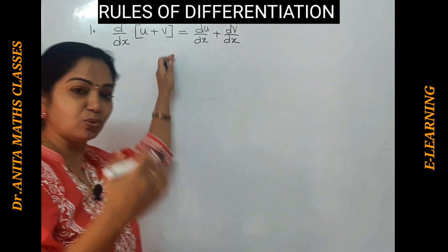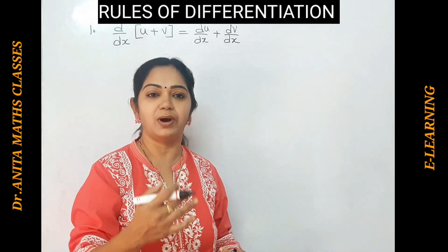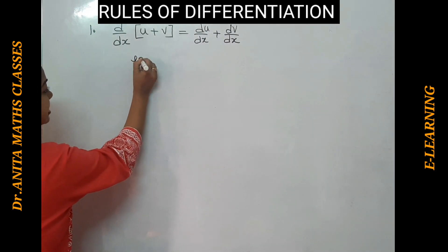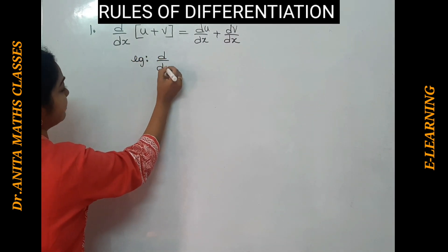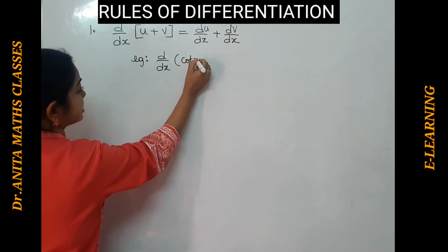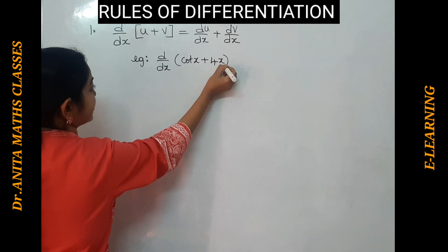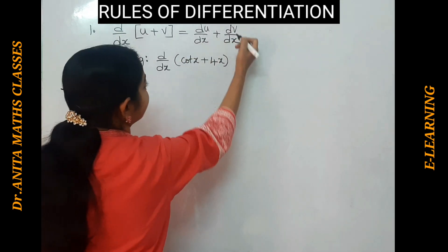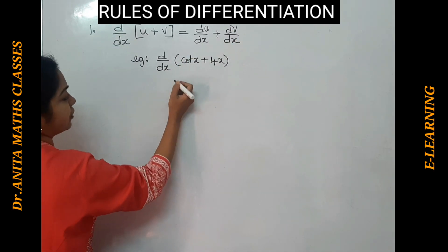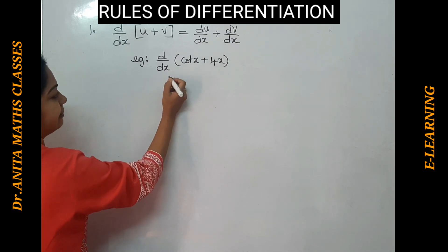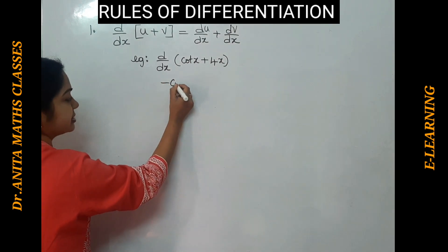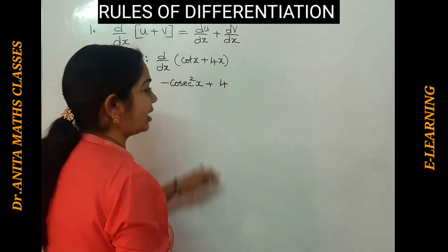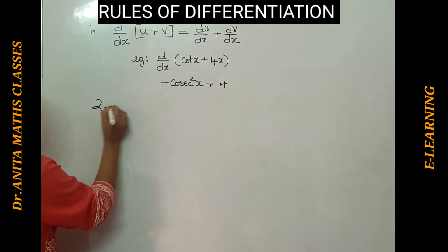For each rule I will give you one example so you can understand easily. Let me differentiate d/dx of cot x plus 4x. You can keep on adding the derivatives for n number of functions. So d/dx of cot x is minus cosec squared x, plus d/dx of 4x is just 4. As simple as this.